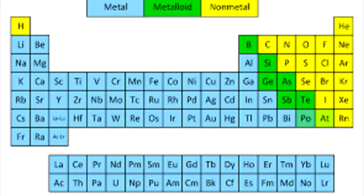For example, metals include iron, gold, nickel, copper, etc. Non-metals include carbon, nitrogen, oxygen, phosphorus, and sulfur. Metalloids include boron, silicon, and germanium.